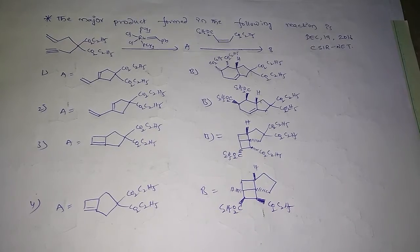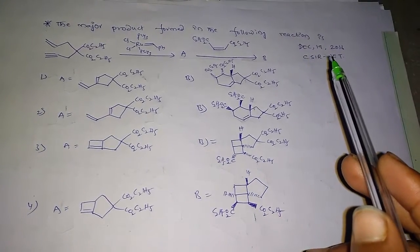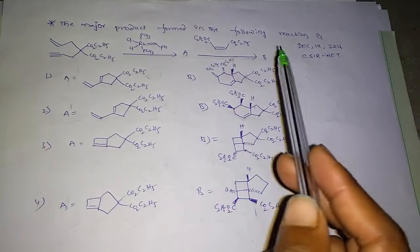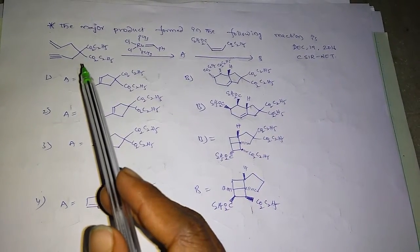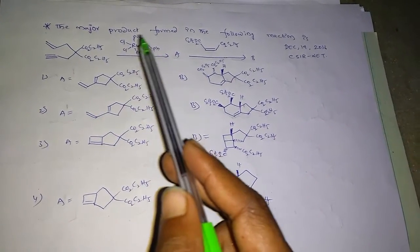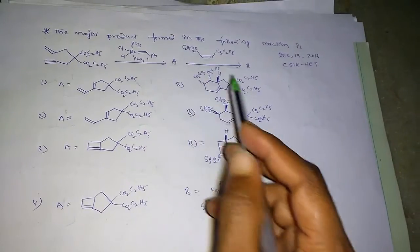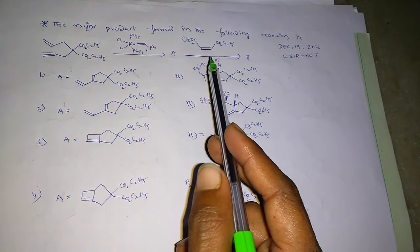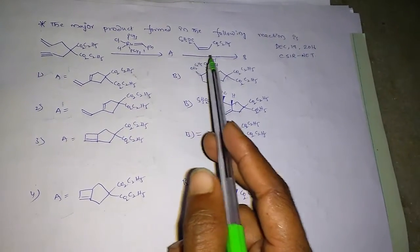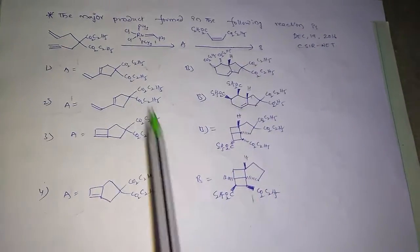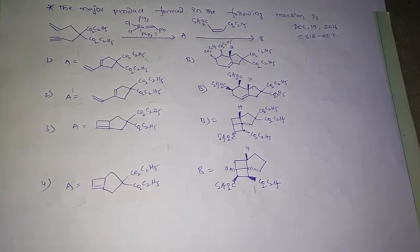Hi, this is Ranjiri. This question appeared in the December 19, 2016 CSIR NET exam. The question is: the major product formed in the following reaction. We have the reactant here, and this is Grubbs' catalyst. The product is A, and then further by adding it we get B. So what is A and what is B? We have four options — let's check them and solve this problem.